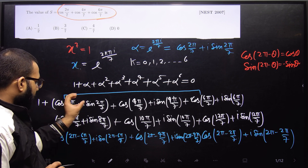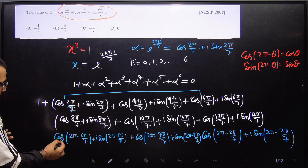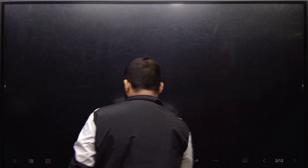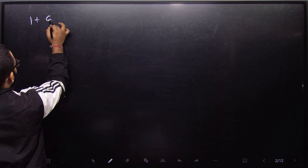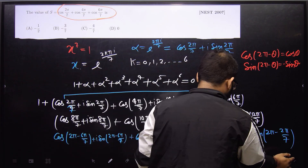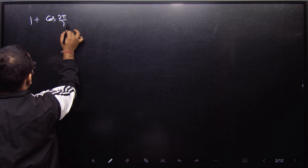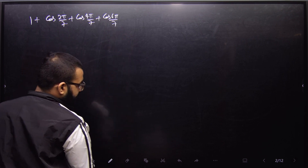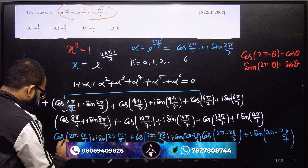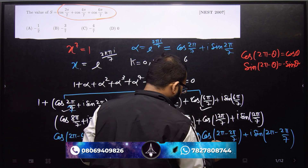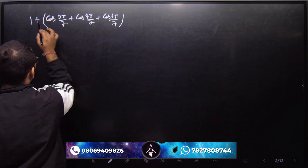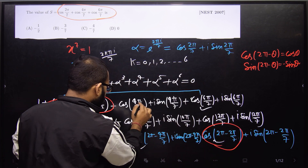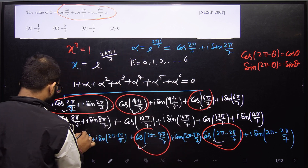The higher power terms α⁴, α⁵, α⁶ simplify to cos(2π/7), cos(4π/7), cos(6π/7) again on the real side (using the 2π − θ identity). So separating the real part, we get 1 + 2·cos(2π/7) + 2·cos(4π/7) + 2·cos(6π/7), since each cosine term appears twice — once from α, α², α³ and once from α⁶, α⁵, α⁴.